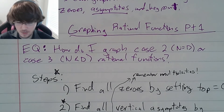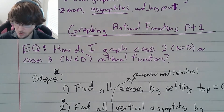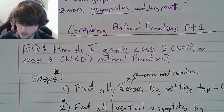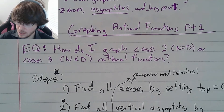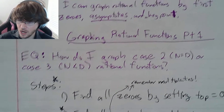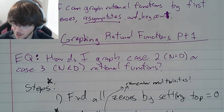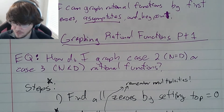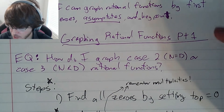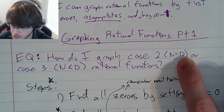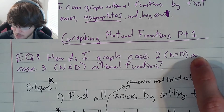I'm continuing to write the notes down first and talk through them nice and slow. Don't forget you can always pause the video if you need time to write it down, and you can always email me if you need help. We're going to call this graphing rational functions part one. My essential question is: how do I graph case two — when the numerator's degree equals the denominator's degree — or case three — when the numerator's degree is less than the denominator's degree — rational functions.